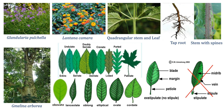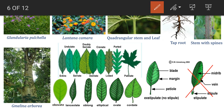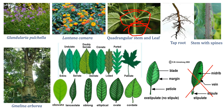Now let's see the first image. Glandularia pulchella shows the herb habit in the family Verbenaceae. The second is Lantana camara, which shows shrub habit. And Melia arborea shows tree habit. Here you can see a quadrangular stem, and if you look at the same image, you can also see the opposite phyllotaxy. If there are more leaves coming out of the same node in a circular fashion, then it is a whorled phyllotaxy. This is the taproot system which is typically present in dicotyledons. In another image, you can see the stem with spines, which belongs to Lantana camara — a representative character.